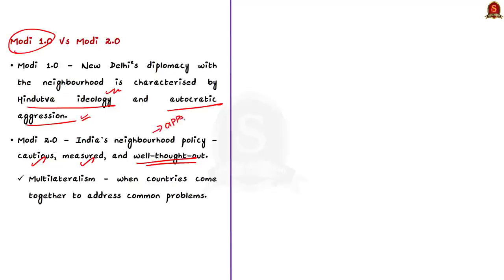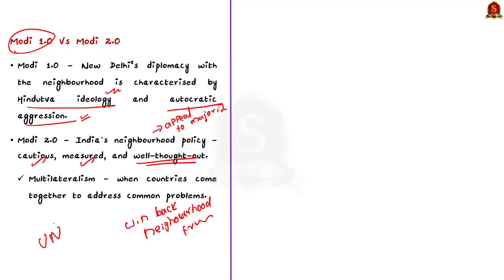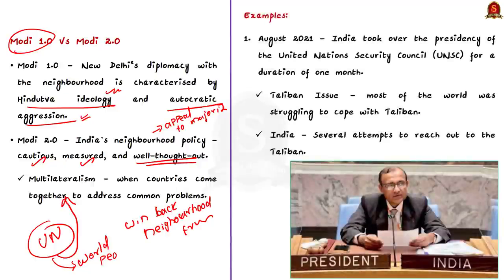This change in foreign policy is to win back the neighbors to India's side. The author is talking about multilateralism — in international relations, multilateralism is when countries come together to address common problems. For example, the United Nations is a multilateral organization where world nations have come together to ensure world peace. India is now engaging with its neighbors using the principle of multilateralism, whereas earlier India used to engage with its neighbors in a big brotherly attitude. According to the author, India has become more result-driven and interest-based rather than ideology-based.